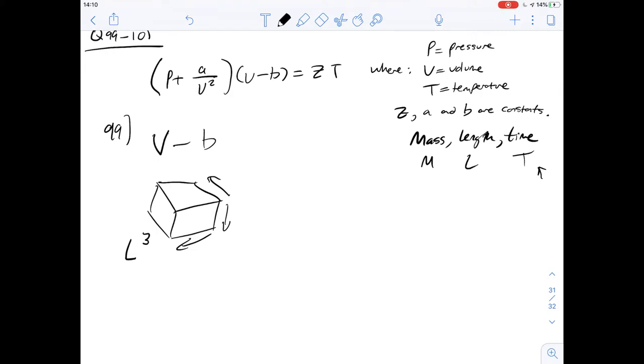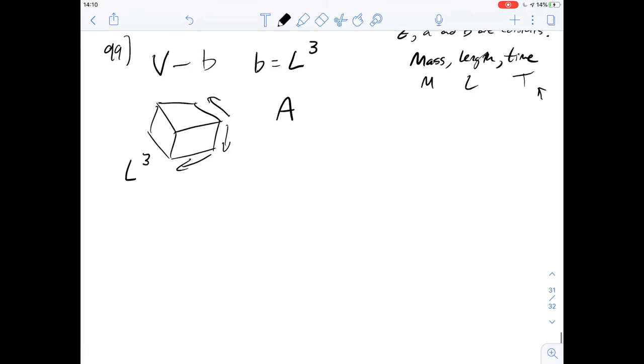And so the units you can use here would be L cubed. And they're the three things that define this volume. And so if you're taking something away from that, you can assume that we'll have the same units. And so we can say that the units for B, or the dimensions of B, are going to be L cubed. And that gives us an answer therefore for 99 of A.